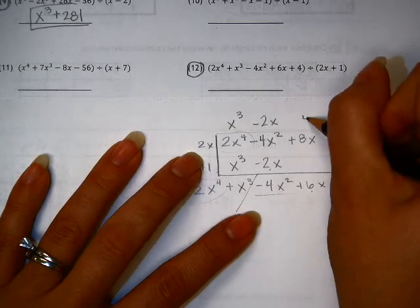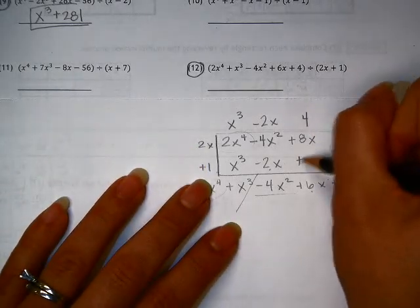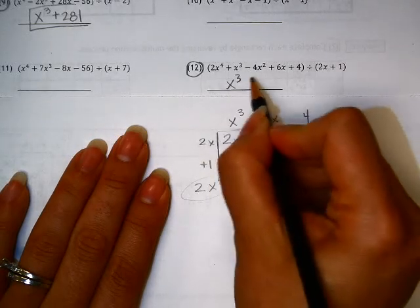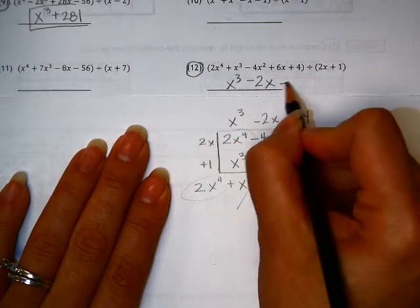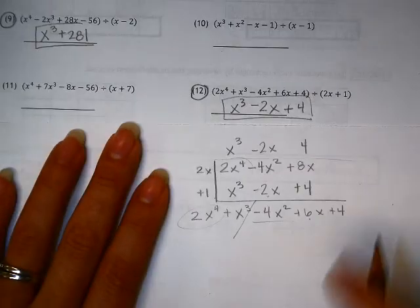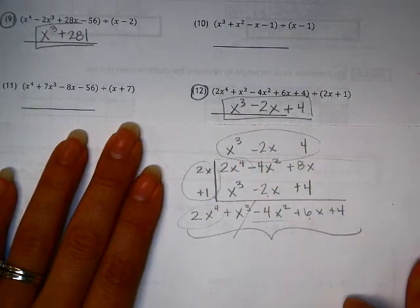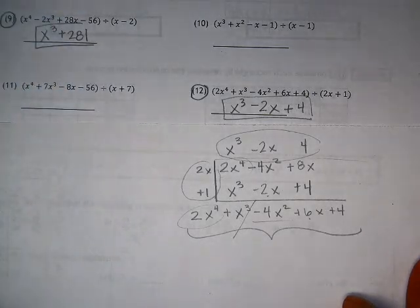And then that would be 4 times that would make that work. And then plus 4. So that means it goes in evenly. And this is the answer of how much it goes in. In other words, this guy times this guy would give us our answer down here. That's how those guys work.